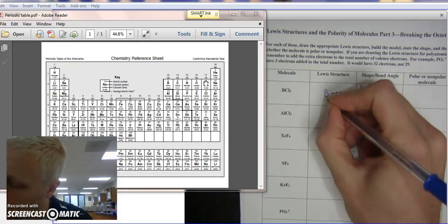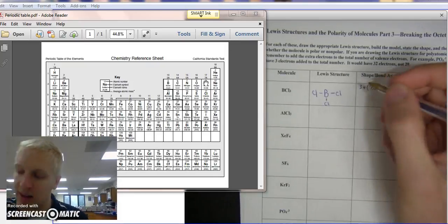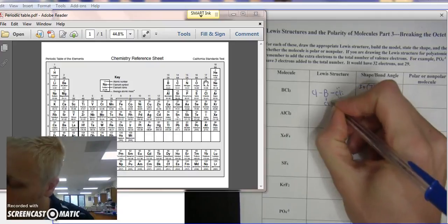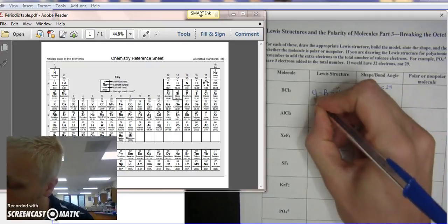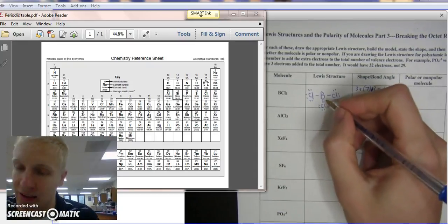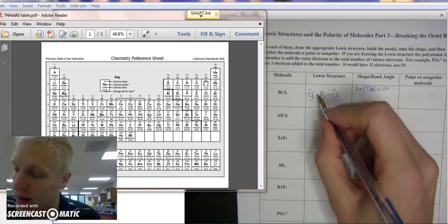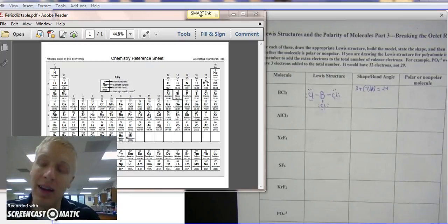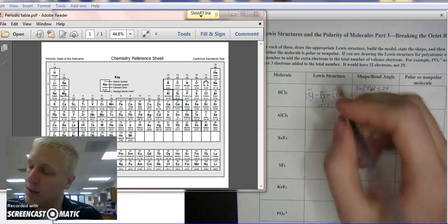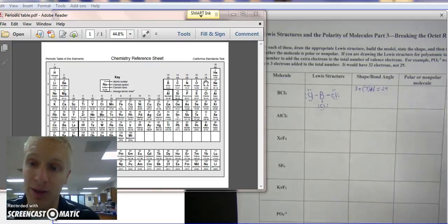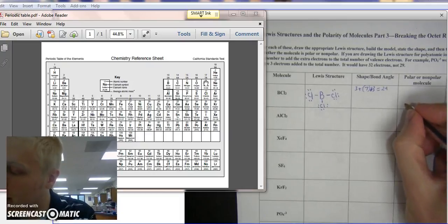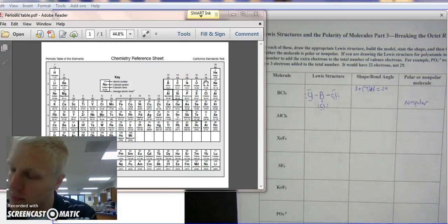So then we have chlorine, chlorine, and chlorine. They each have at least one bond. [counting from 2 to 24 electrons]. That's all the electrons you have, and it just so happens that this is okay. It's satisfied, even though boron has just 2, 4, 6 instead of 8 outer electrons. And this is going to be the trigonal planar shape. So trigonal planar is usually going to be symmetrical. Therefore, it is going to be nonpolar.